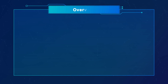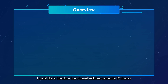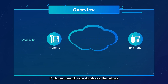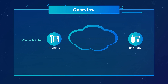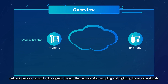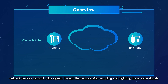Hello everyone. Today, I would like to introduce how Huawei switches connect to IP phones. In contrast to ordinary phones, IP phones transmit voice signals over the network. Based on the TCP/IP protocol suite, network devices transmit voice signals through the network after sampling and digitizing these voice signals.